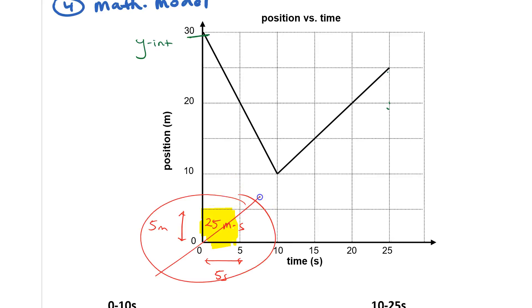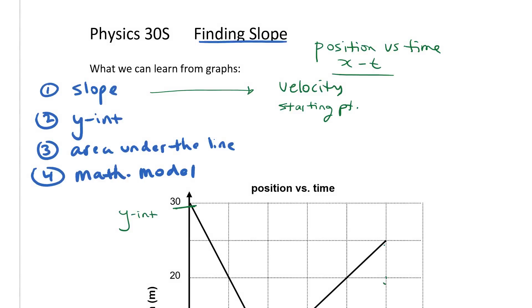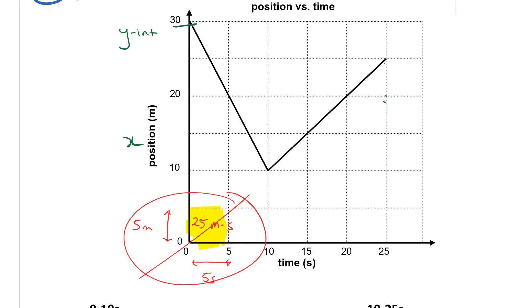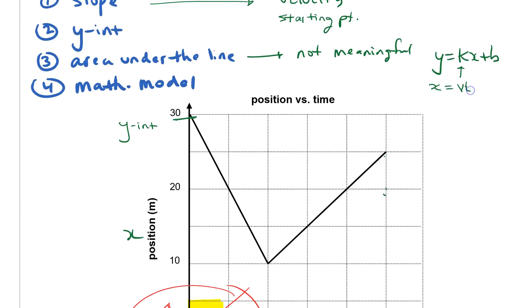So for this particular graph, for the position time graph, the area under the line is not meaningful. The mathematical model that we developed, you take your y equals kx plus b and you substitute all the things in. So the y, in this case position, we actually use the x value for the x variable. So x is going to be equal to, the slope is equal to velocity, so I'll put a v in there. My x-axis is actually time, so I'll put time like this, plus b is my y-intercept. My starting position I'll put as x₀, meaning my beginning position. So this would be my general mathematical model.